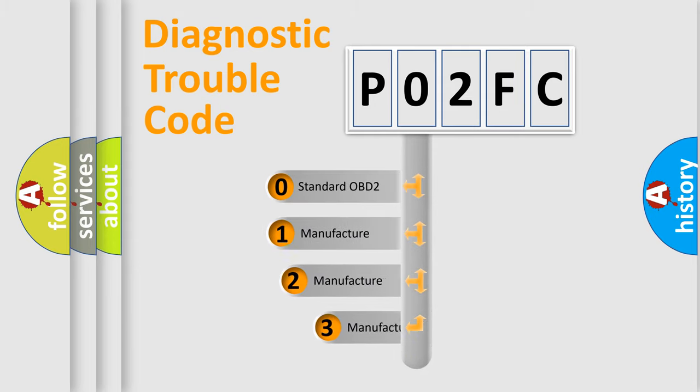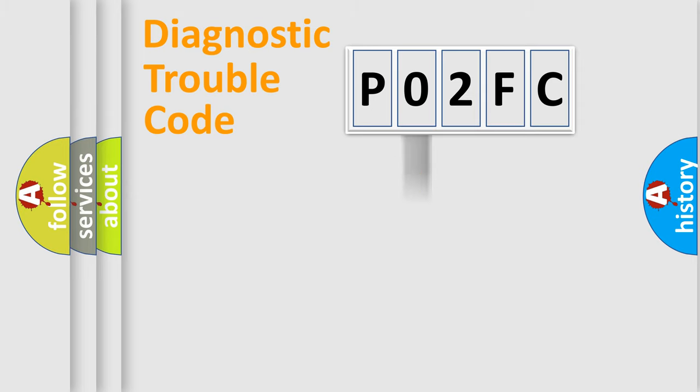If the second character is expressed as zero, it is a standardized error. In the case of numbers 1, 2, or 3, it is a more specific expression of the car-specific error.